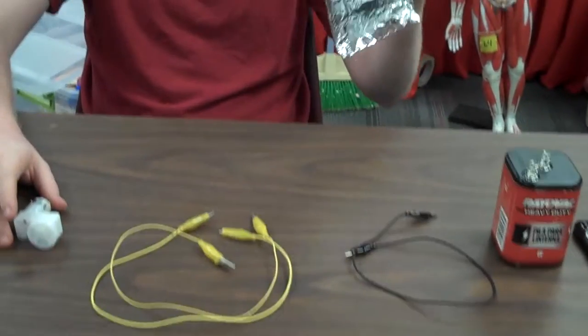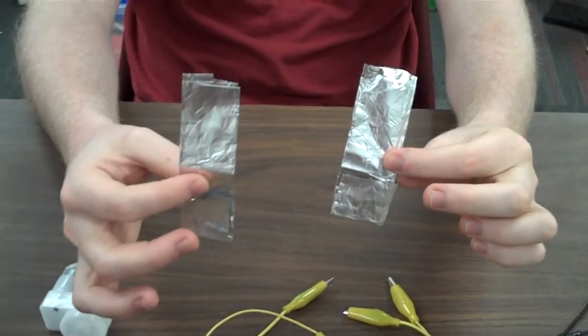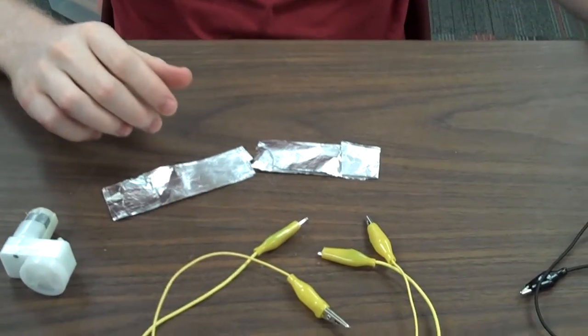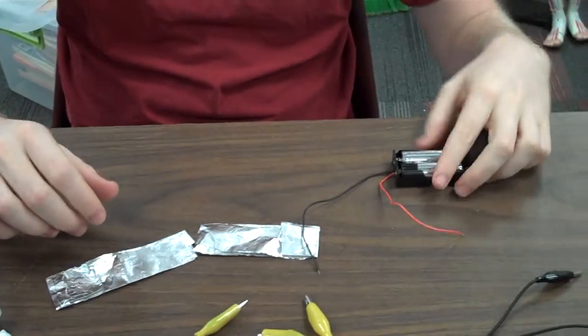So to start off you're going to take your tin foil and you are going to make it into two strips like this. You're going to pick your battery, I'm going to take these from here.